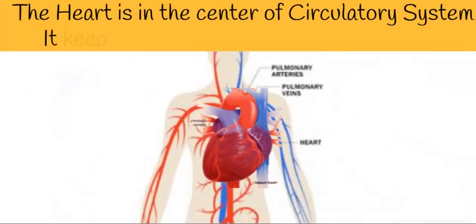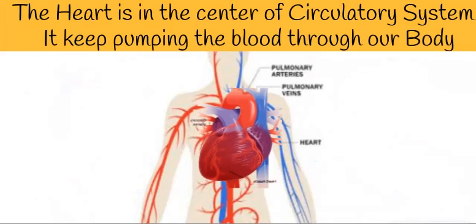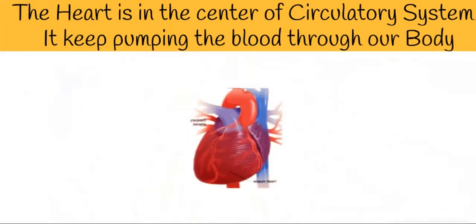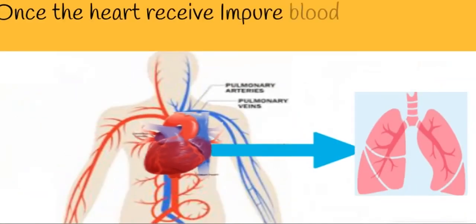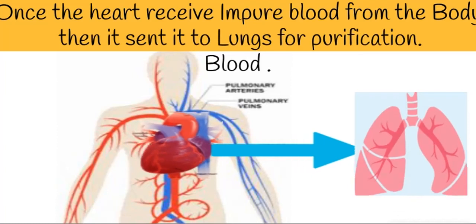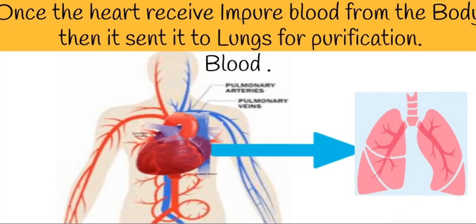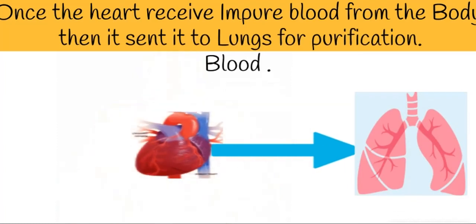The heart is in the center of the circulatory system. It keeps pumping the blood throughout our body. Once the heart receives impure blood from the body, it sends it to the lungs for purification of blood.